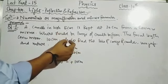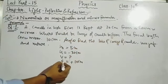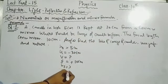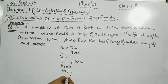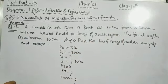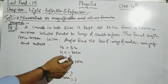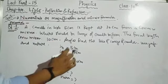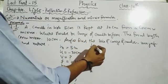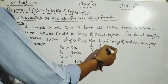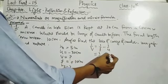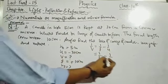This question asks for 4 things: v (image position), height of image, magnification, and nature of image. To find v, use the mirror formula: 1/v = 1/f - 1/u. Substituting: 1/v = 1/10 - 1/(-30) = 1/10 + 1/30. Students, f = 10 and u = -30, so minus times minus gives plus.